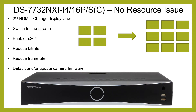Enable H264 on the camera — go to the parameters and change it from H265 to H264. If still not working, reduce the bitrate on the cameras — you don't have to reduce it by much, just a little bit. And if still nothing, reduce the frame rate.